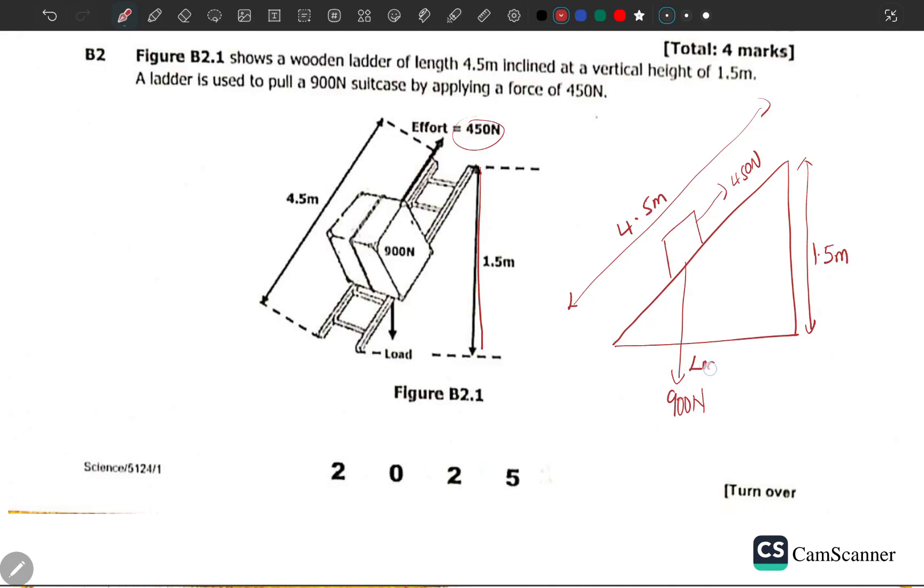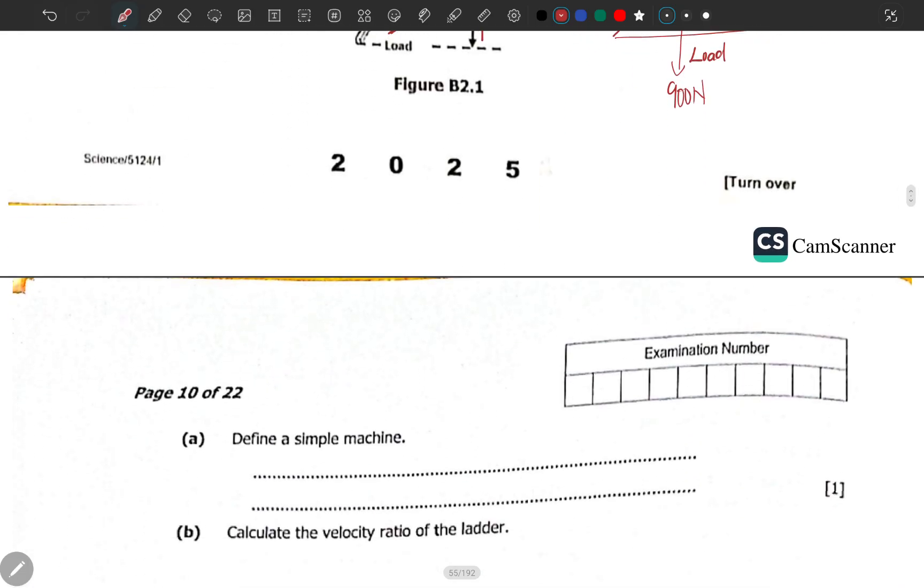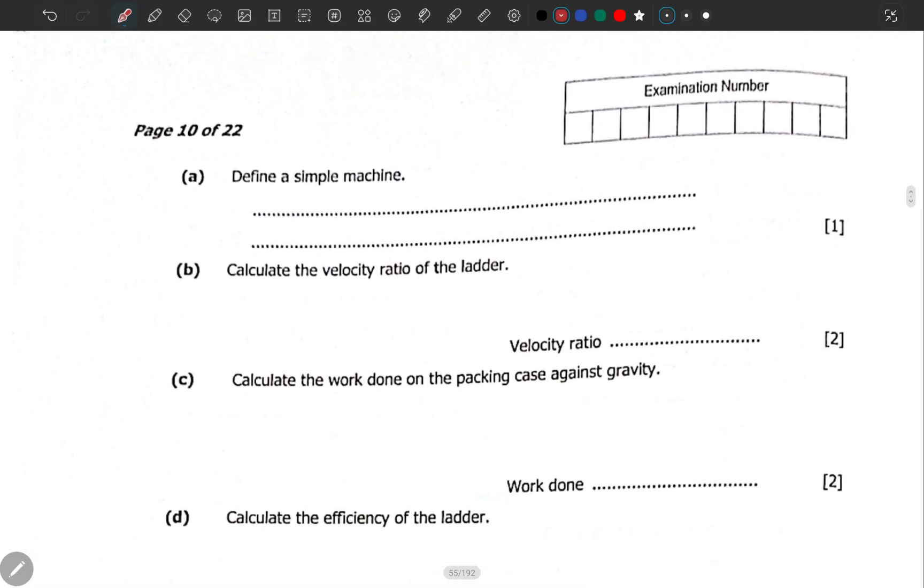This is the load indicated by the arrow here. The question is asking us: Define a simple machine. What is a simple machine?